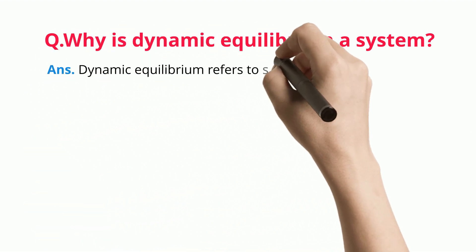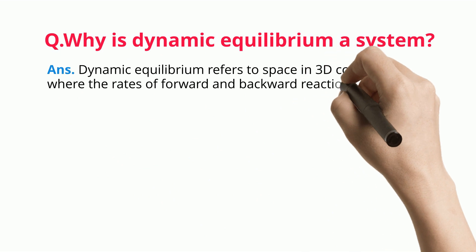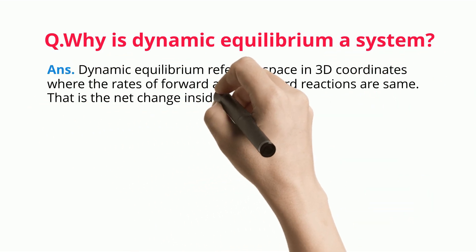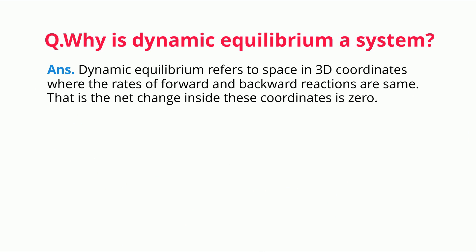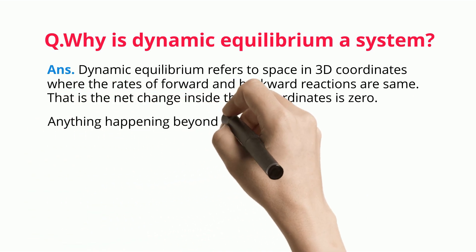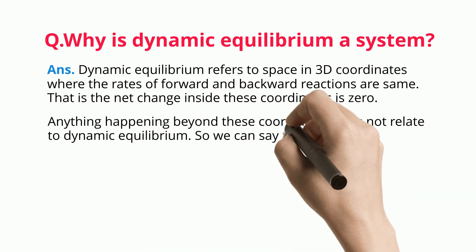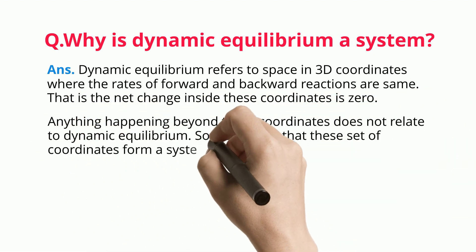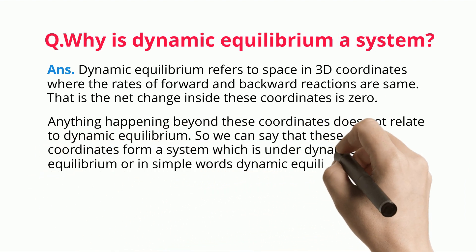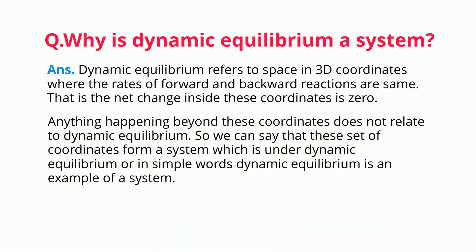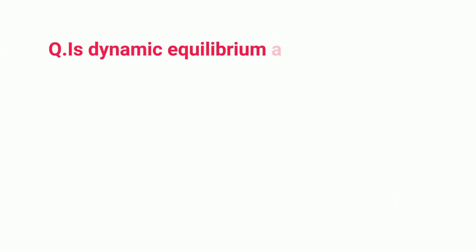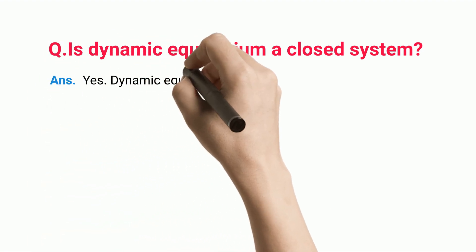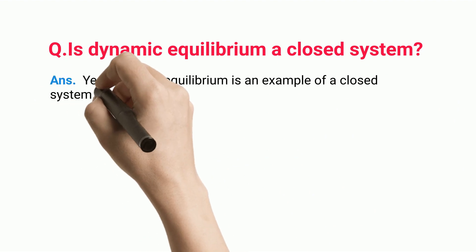Why is dynamic equilibrium a system? Dynamic equilibrium refers to a space in 3D coordinates where the rates of forward and backward reactions are the same — that is, the net change inside these coordinates is zero. Anything happening beyond these coordinates does not relate to dynamic equilibrium. So we can say that these set of coordinates form a system which is under dynamic equilibrium.